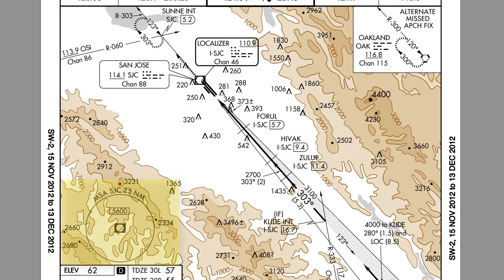In the lower left-hand corner on this chart is the minimum sector altitude diagram, or minimum safe altitude. We'll discuss MSAs later in a different lesson, but they're on every instrument approach procedure.